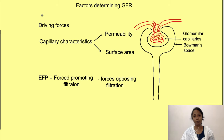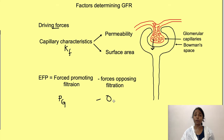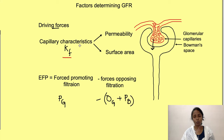The factors which affect glomerular filtration include the driving forces and the filtration coefficient. The driving force mainly includes the glomerular hydrostatic pressure, which promotes filtration, and the forces opposing filtration: the glomerular oncotic pressure and tubular hydrostatic pressure. The filtration coefficient includes the characteristics of the capillaries — how permeable they are and what their surface area is.